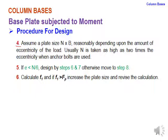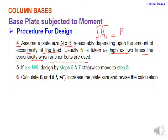In the fourth step, assume a plate size N × B reasonably depending on the eccentricity. Generally, N is taken as up to two times the eccentricity when anchor bolts are used. A practical approach is to take the square root of A1 for a square base plate, then check that both B and N are greater than 2e (double the eccentricity).